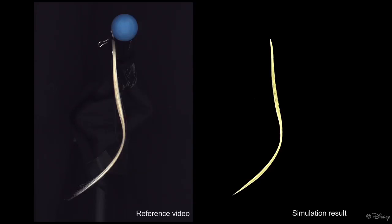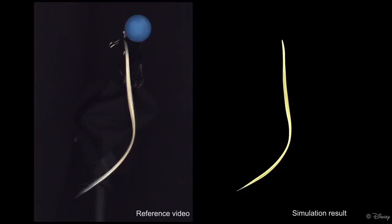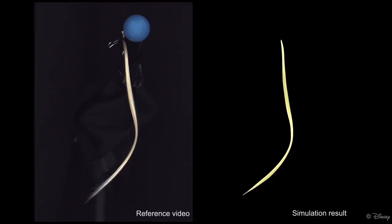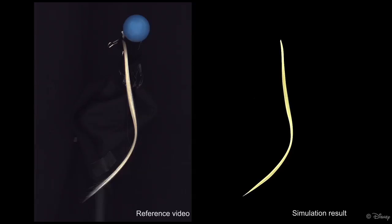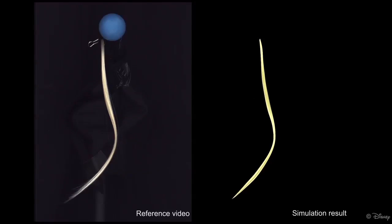We start by showing simple experiments using a single hair strand. On the left is a real strand, and on the right is the result of a simulation using our optimized parameters. To show that our parameters are meaningful, we compute only the rigid motion applied to the strand in a second video, and apply that motion in a simulation using our recovered parameters.